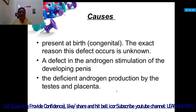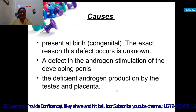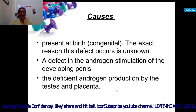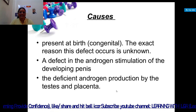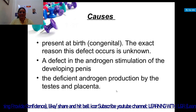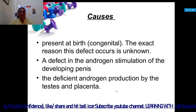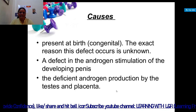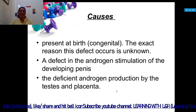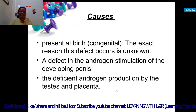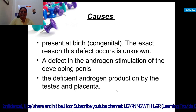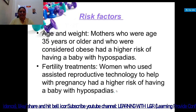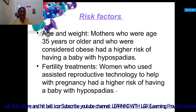Although it is not a genetic condition, hypospadias can run in some families. If present at birth it is congenital, and the exact reason this defect occurs is unknown. Causes include a defect in androgen stimulation of the developing penis and deficient androgen production by the testis and placenta.